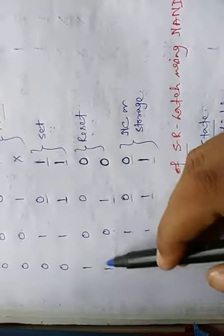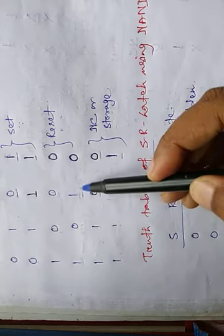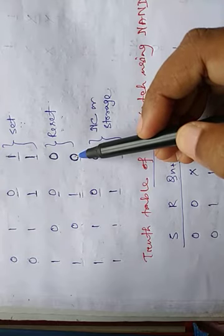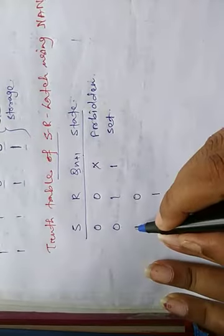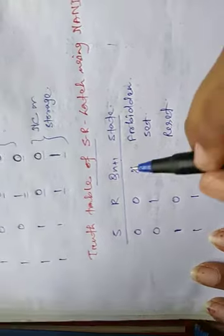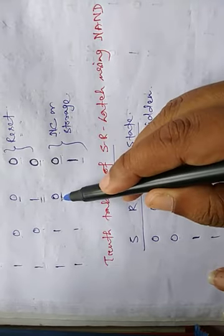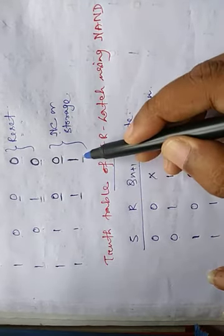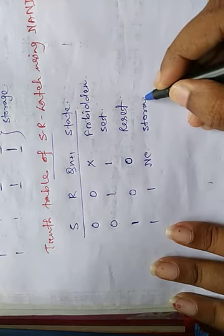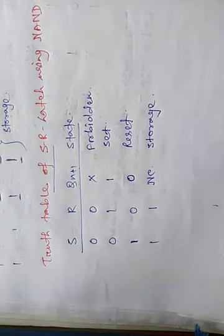For S=1, R=0 — whatever Qn is, output is 0, that is the reset condition. For S=1, R=1 — state does not change: if Qn is 0, Qn+1 is also 0; if Qn is 1, Qn+1 is also 1. This is no change, also called storage. So this is the complete truth table of NAND gate SR latch. Always start with the value of Qn so that you can get the desired output accordingly.